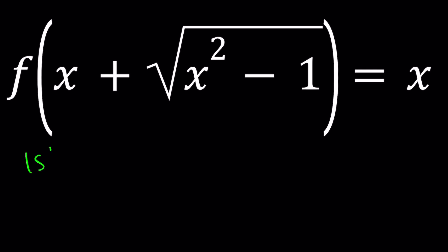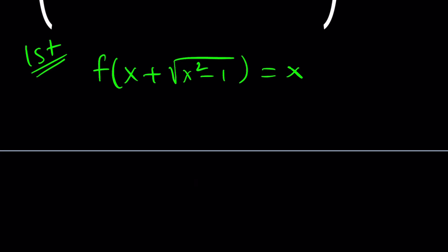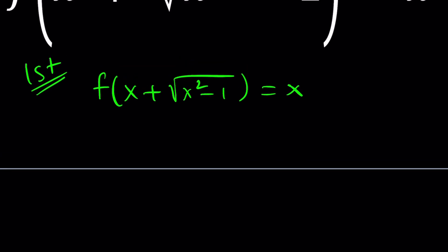Alright, so let's go ahead and start with the first method. I have f of x plus the square root of x squared minus 1 equals x. So my goal is to find an expression for f of x.